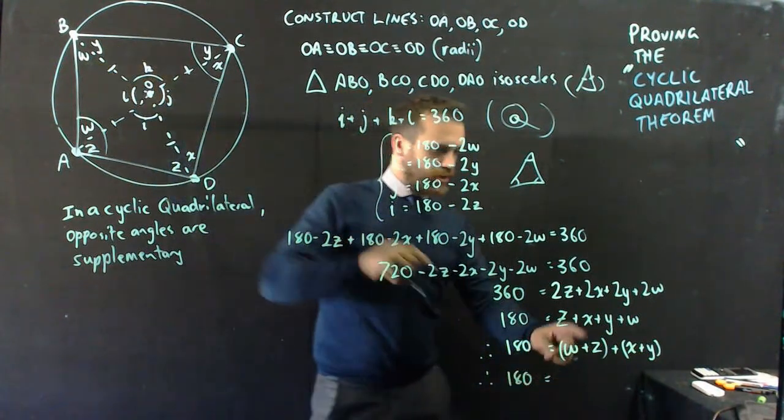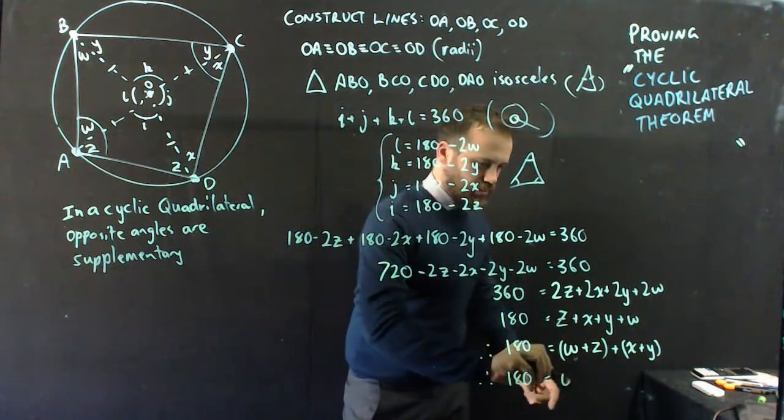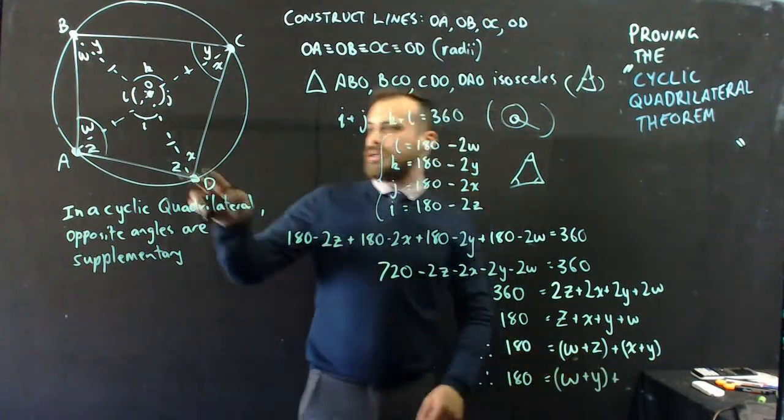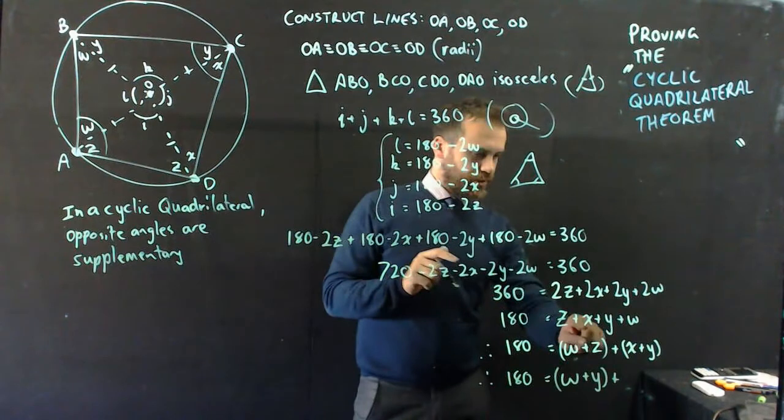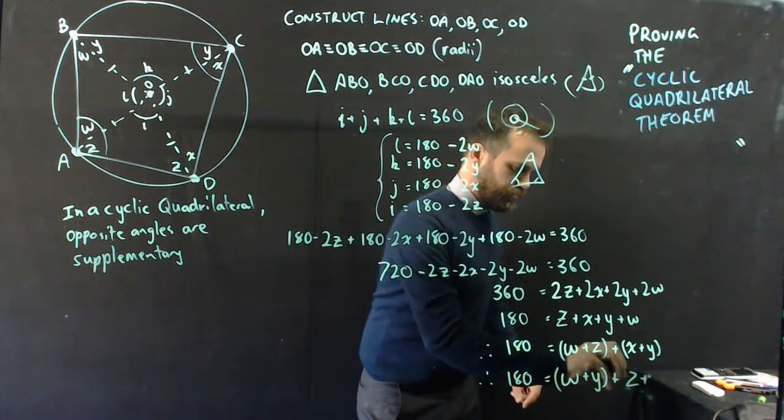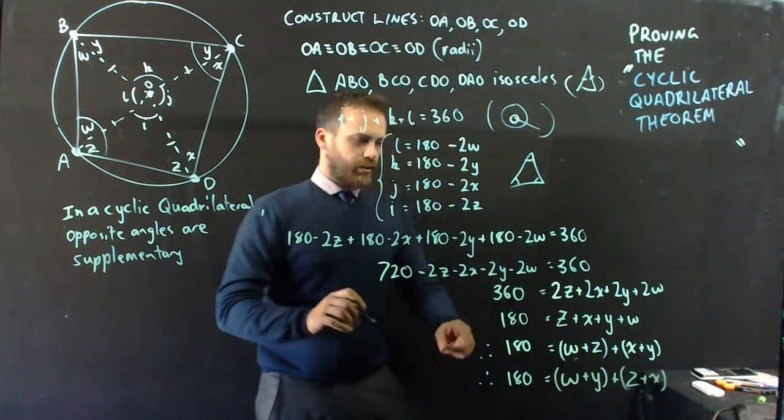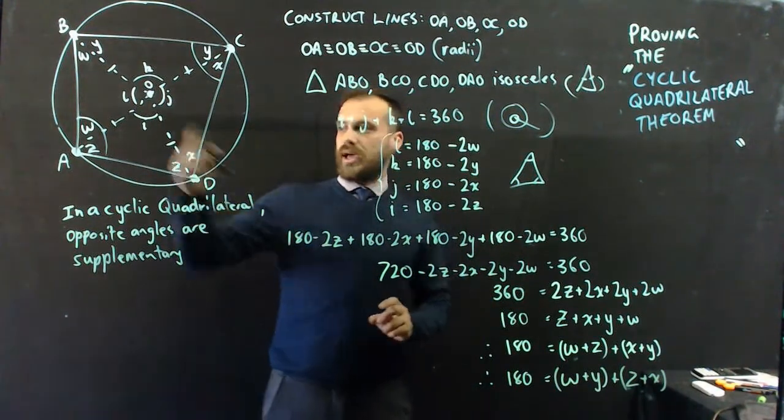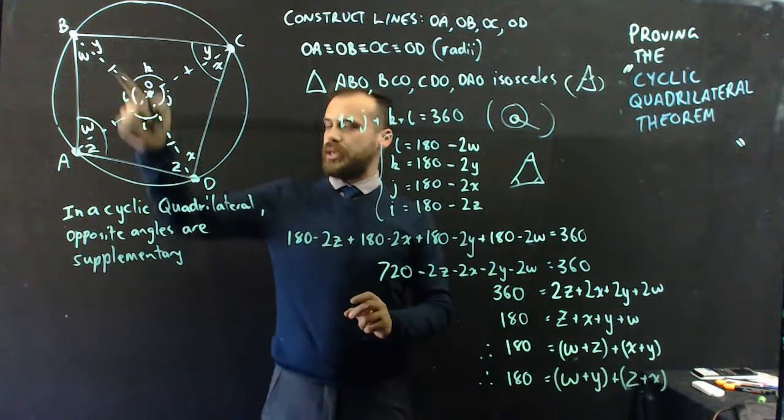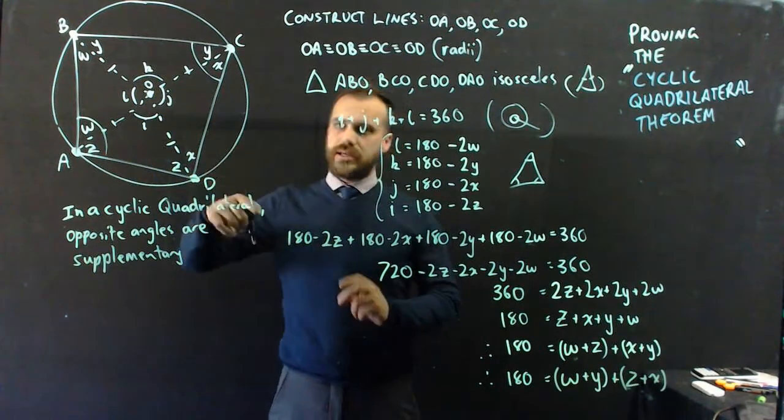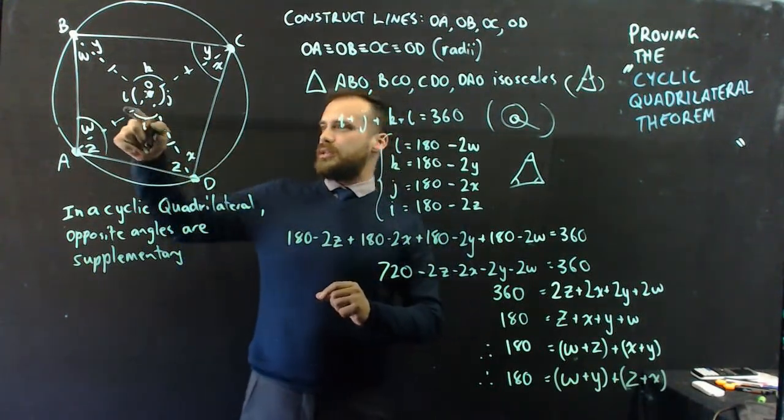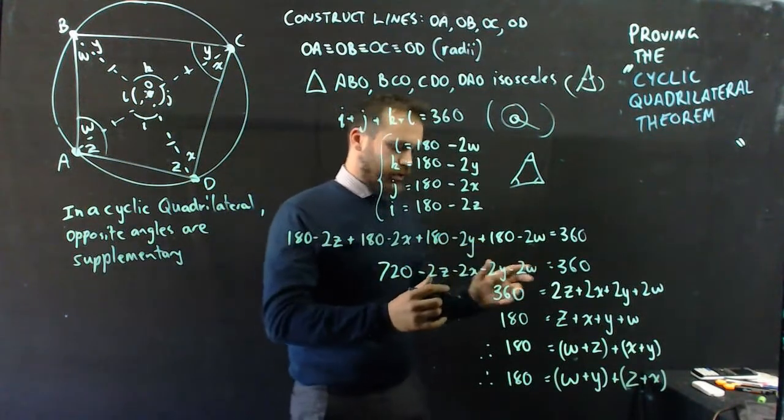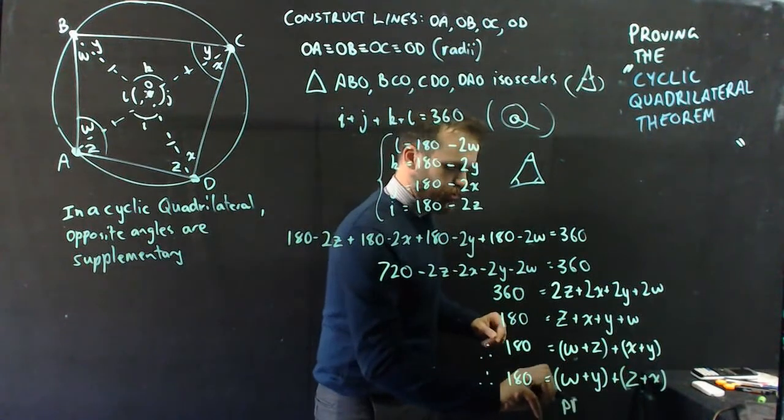I can say that W plus Y, W plus Y, plus Z plus X, Z plus X, Z plus X, is true, right? Therefore, angle BAD and BCD are supplementary, and angle ABC and CDA are complementary. Proven.